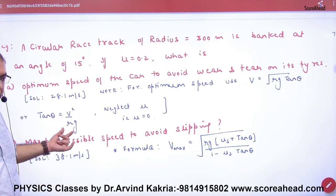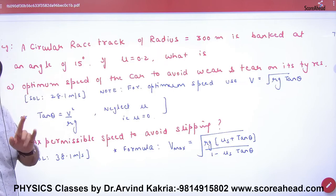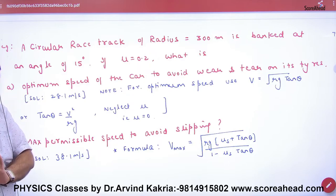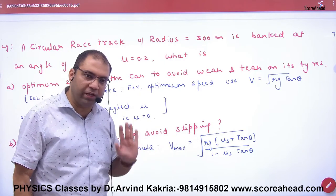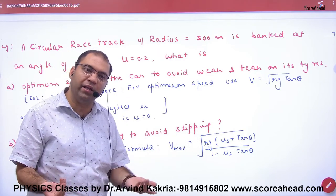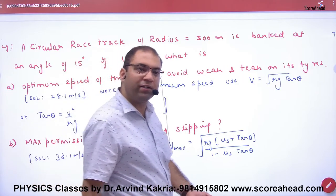Tan theta v squared by RG. Here the answer will be. One formula will be used in this. Point clear? What is the question of banking of track? This is the formula. But this is not used. The person is saying that I don't have tire. If you don't have tire, then you will do the banking.